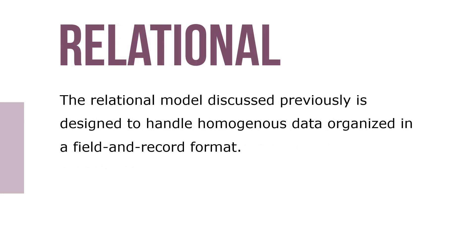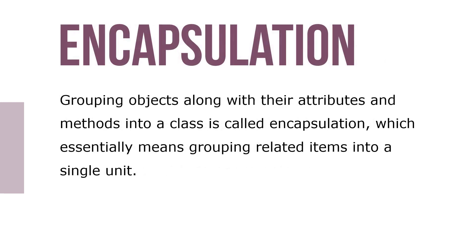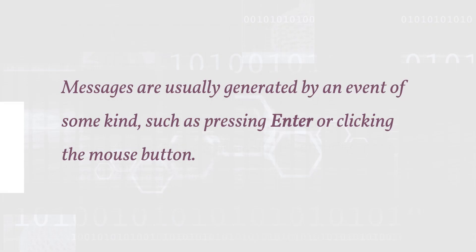The relational model discussed previously is designed to handle homogeneous data organized in a field and record format. To address these problems, object-oriented databases were developed. Like object-oriented programming, this data model represents real-world entities with database objects. Grouping objects among their attributes and methods into a class is called encapsulation, which essentially means grouping related items into a single unit. Object-oriented databases can also use inheritance, which means new objects can be created faster and more easily by entering new data in attributes. Messages are usually generated by an event of some kind, such as pressing enter or clicking on the mouse button.